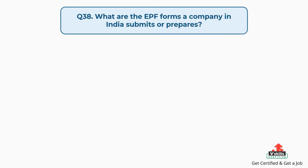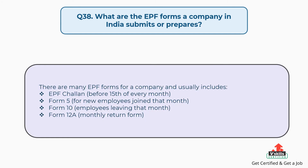Question number thirty-eight: What are the EPF forms a company in India submits or prepares? The answer is, there are many EPF forms for a company and usually includes: EPF challenge, before the 15th of every month; Form 5, for new employees who joined that month; Form 10, for employees leaving that month; and Form 12A, the monthly return form.